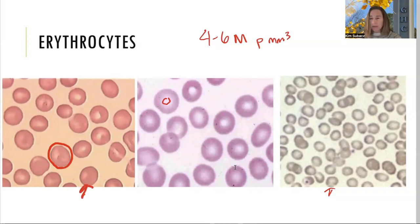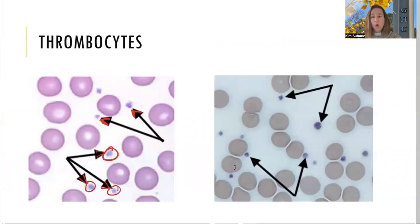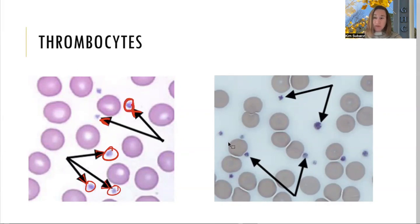To summarize erythrocytes: function is to transport gases and move oxygen; recognize them on sight — they are red and are the majority of cells you'll see. Next up are thrombocytes, our platelets — these little purplish dots at the ends of the arrows. They are small because they are not actually whole cells; they are pieces of a cell called a megakaryocyte.